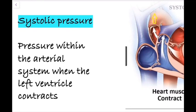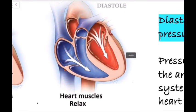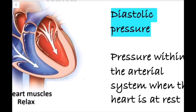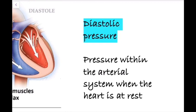The high pressure during systole is known as systolic blood pressure, and in a normal healthy adult it is about 120 millimeters of mercury. After systole, the ventricles relax and blood flows from the atria to the ventricles. During this time, since there is no force from ventricular contraction, the blood pressure is low — this is known as diastolic blood pressure, and in a healthy adult it is about 80 millimeters of mercury.